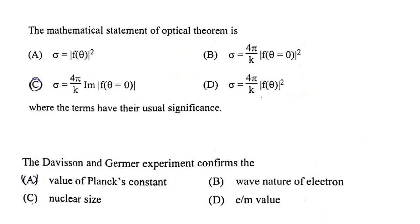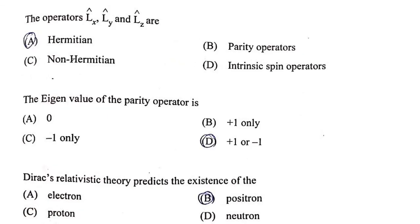The mathematical statement of the optical theorem is σ = (4π/k)·Im[f(θ=0)]. Next: the Davisson and Germer experiment confirms the wave nature of the electron.